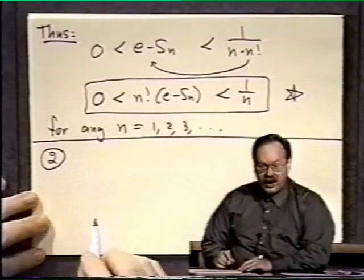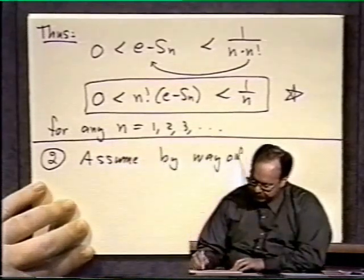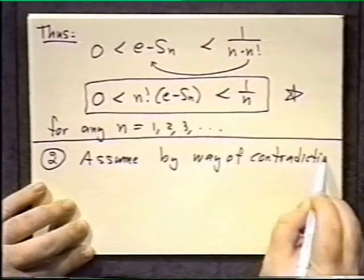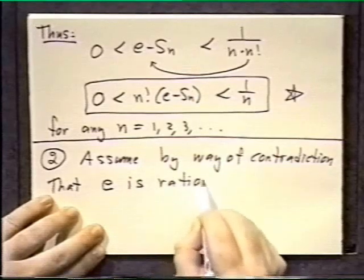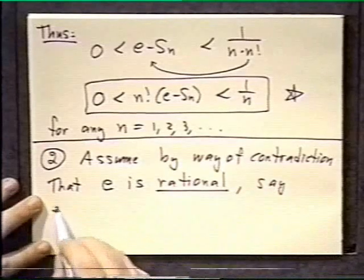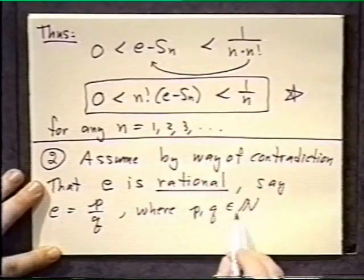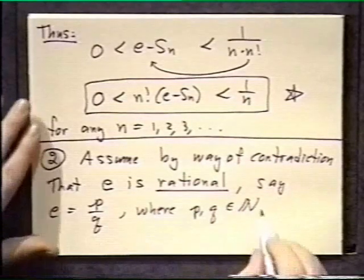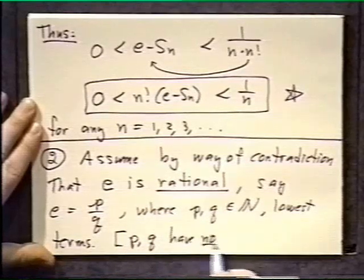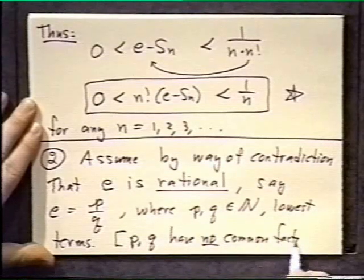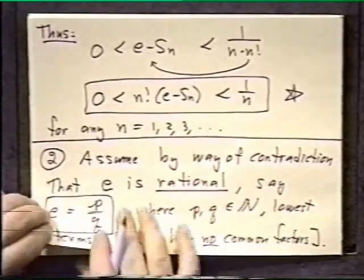Now, I'm going to use that result to actually address the heart of the proof. Two, we will assume, as I've done before, by way of contradiction, by way of contradiction, that the opposite of what we believe to be true is true. We will say that e is rational. Okay? Say, to be specific, that e is equal to p over q, where p and q are in the natural numbers. We can assume positiveness because we know that e is a positive number. And we will assume in lowest terms. Which means that p and q, remember, have no common factors. Okay? No common factors. Okay, so we've made the assumption that e is a rational number in lowest terms. Now, let me show you what that assumption will lead to. We're hoping that it will lead to a contradiction.